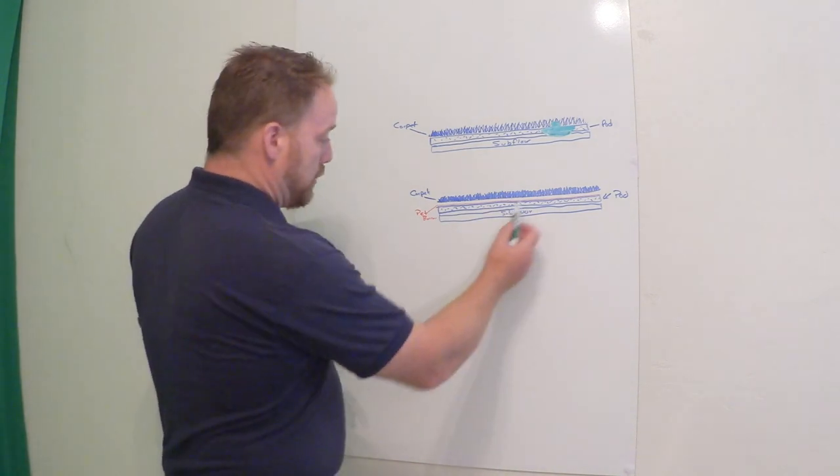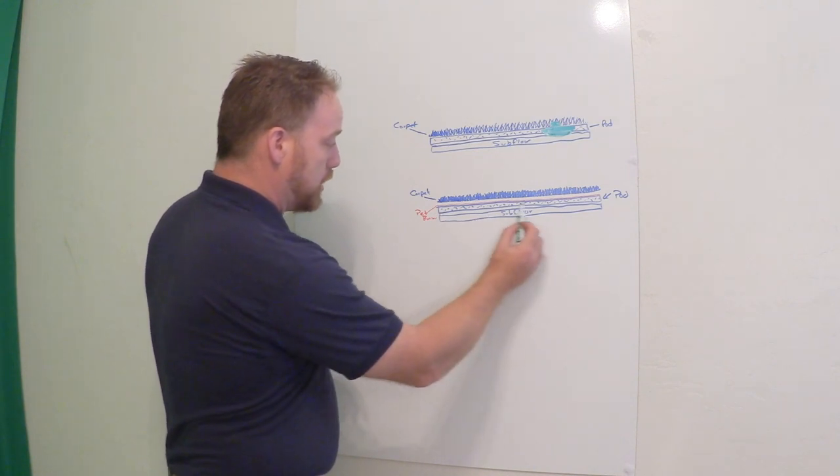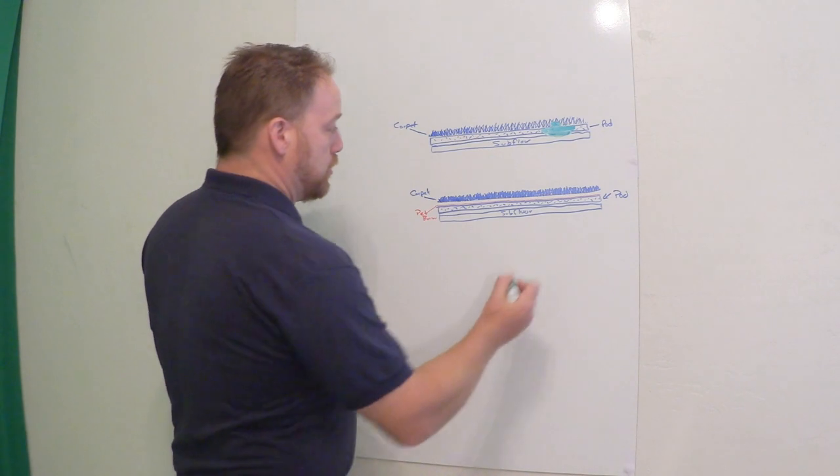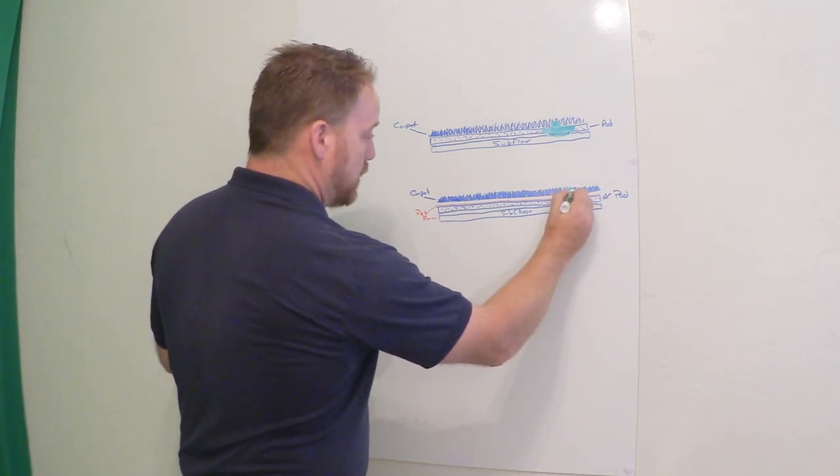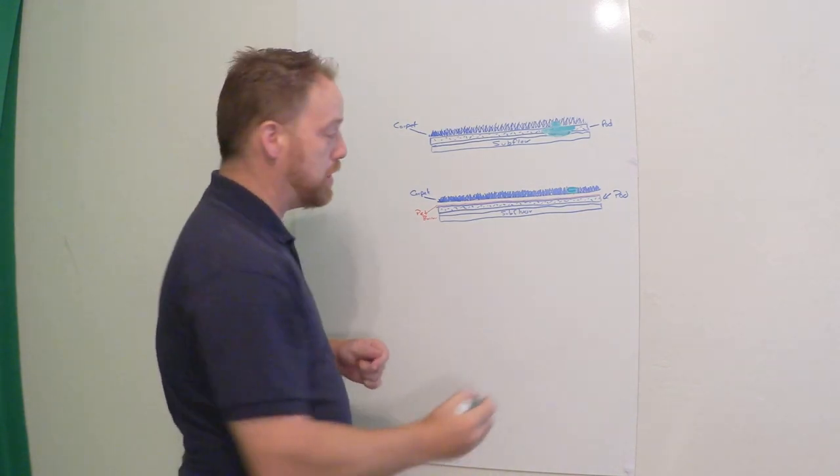So in this one we have the carpet, we have the pad, we have the subfloor, and this red line - this is the moisture barrier. But what actually happens is when your pet has an accident, it comes down and hits this moisture barrier and it can't penetrate.